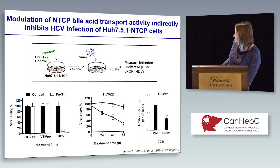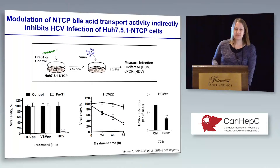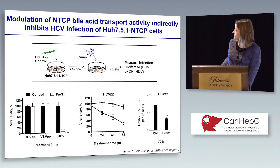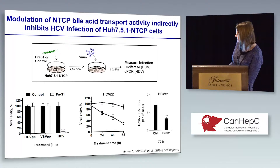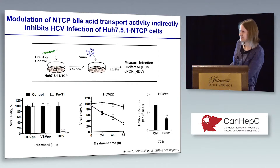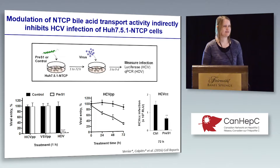However, a 1-hour pretreatment had no effect on HCV-PP or VSV entry. But we noticed that the longer the pre-S1 was on the cells before infection, the greater the effect on viral infection. By 72 hours of pretreatment, we can reduce HCV entry by about 70%, and this was also observed for HCV-CC, so it holds for the full life cycle virus as well.